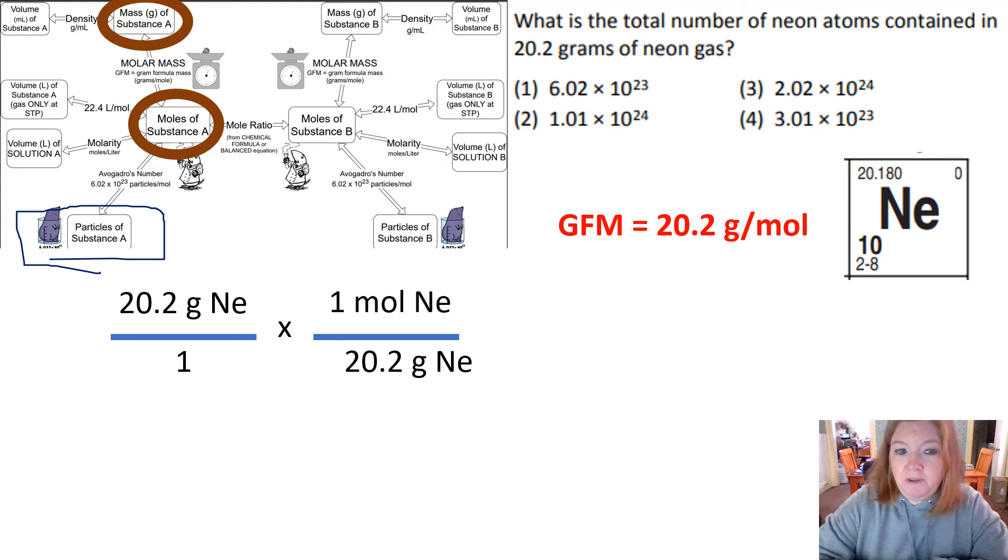So I divide the given mass by the gram formula mass. Now I write it like this because this is grams per mole, and moles then goes on top. That would allow me to cancel that out.